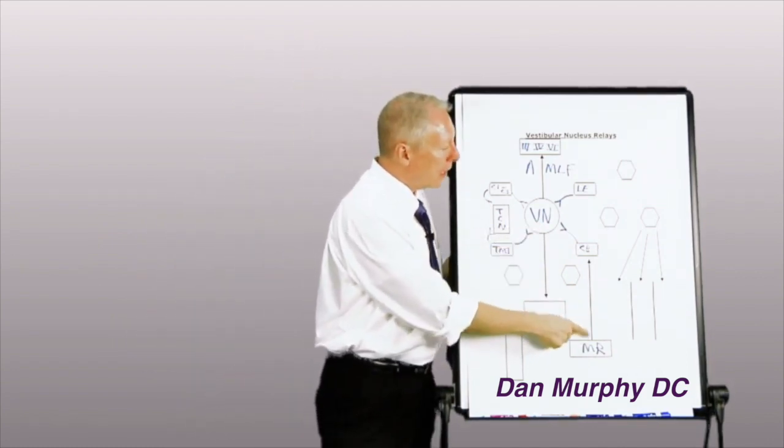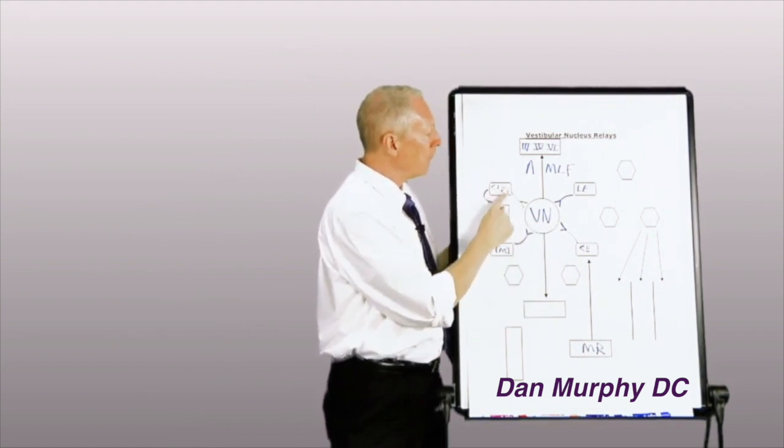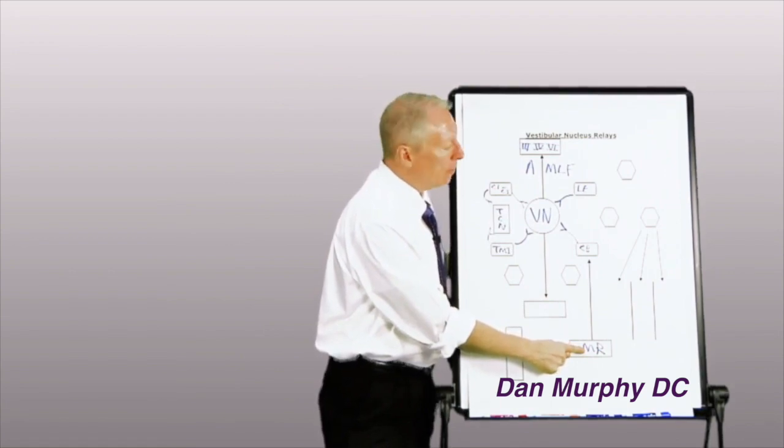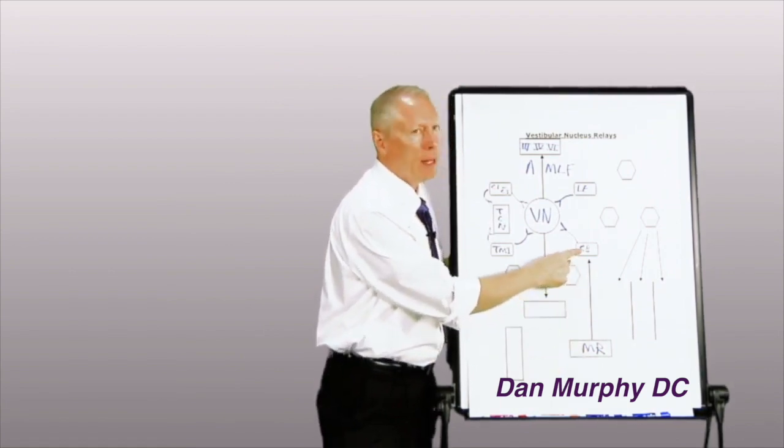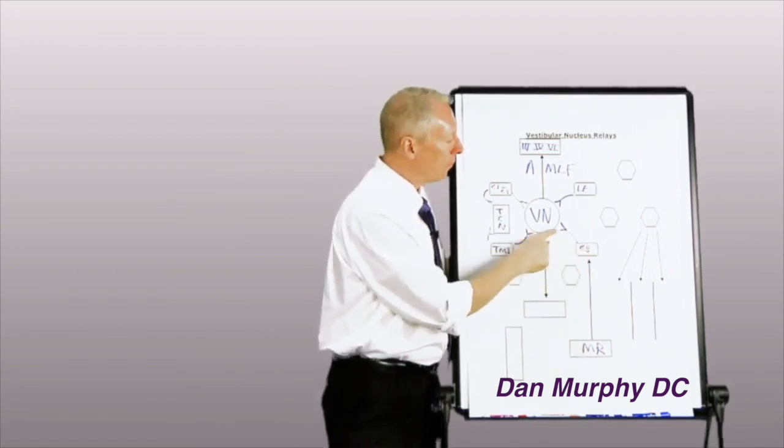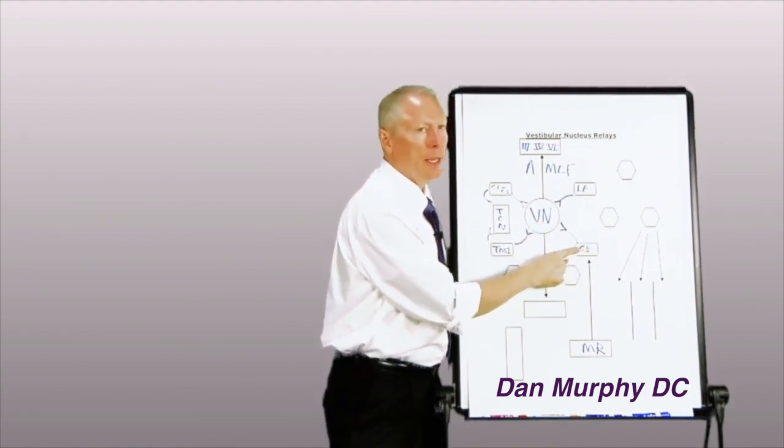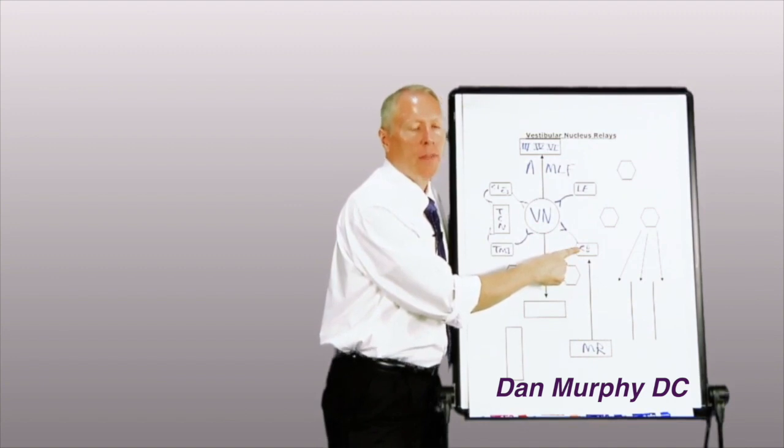And so the next thing I do is I check specifically the upper cervical spine because a mechanical problem anywhere in the body will first have to go to the cerebellum, which is a polysynaptic relay before it gets to the vestibular nucleus, which means every time you have another relay, you can attenuate the communication.